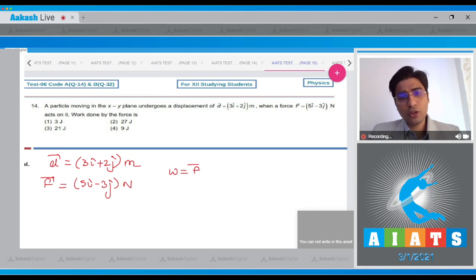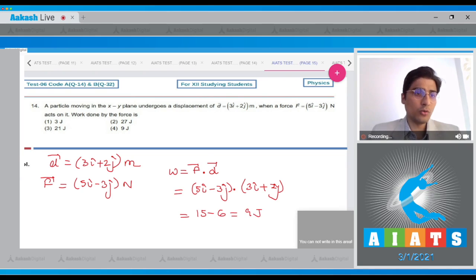The work done will be equal to the dot product of force and displacement. This will be equal to 5i cap minus 3j cap dot 3i cap plus 2j cap. This will be equal to 15 minus 6, that is 9 joules. And hence, for this question, the correct answer is option number 4.